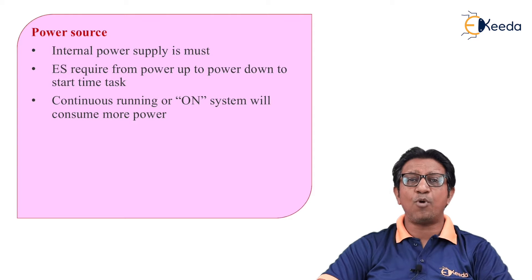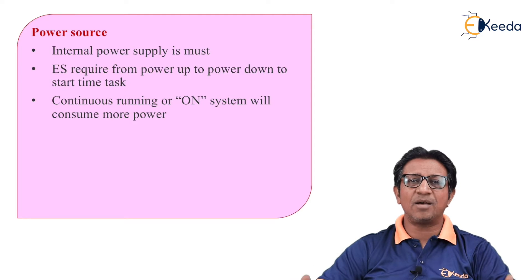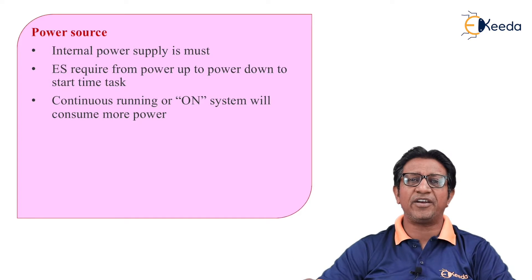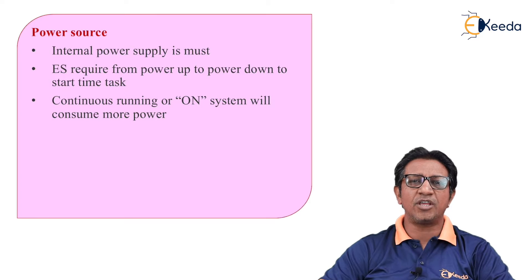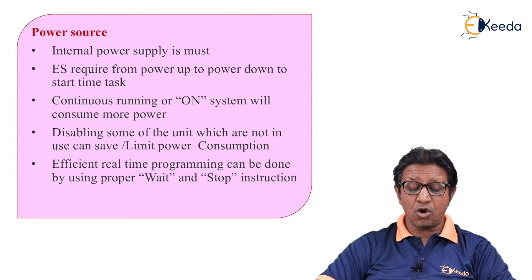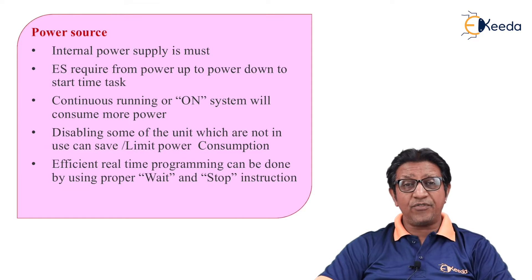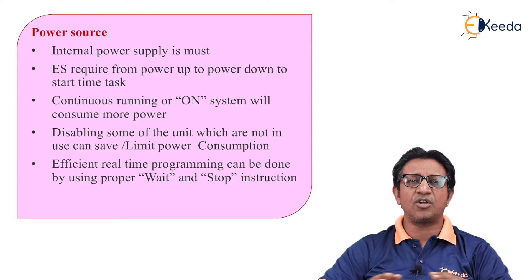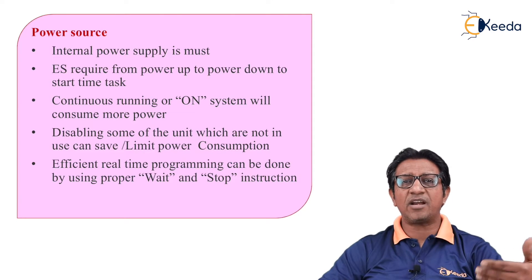Continuous running of the system consumes more power, meaning more battery usage and faster battery drain. For example, a cell phone is an embedded system — when multiple apps are running, the battery drains faster, so we close some apps to minimize power consumption. Disabling unused units saves power. When programming an embedded system, we should use wait and stop instructions so that when a subsystem is not functioning, it can stop, saving battery life.